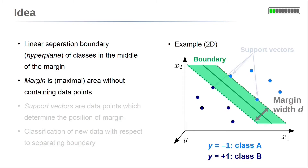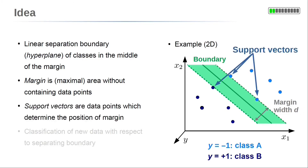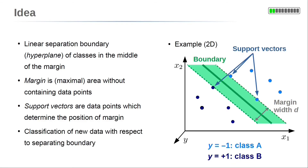The area around this hyperplane without any data points is called the margin. In our illustration, the margin is a green area within the dashed lines. The separating boundary cuts the margin into two halves. The data points which limit the margin's area width are called support vectors. Consequently, they are on the margin's boundary. The separating boundary within the margin can be used to classify new data points with unknown classes.